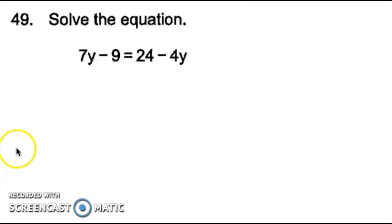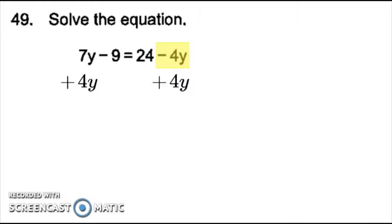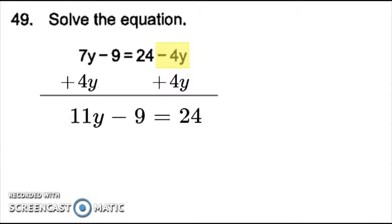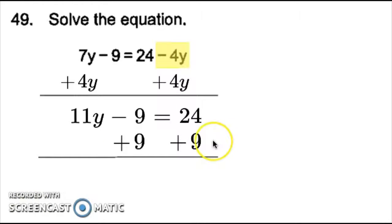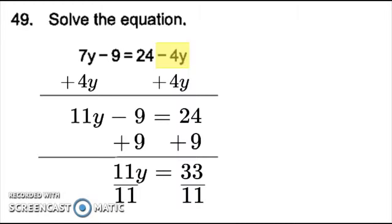For problems like number 49, when there are variables on both sides of the equal sign, I like to move the smallest variable first, which in this case is negative 4y compared to the 7y. Since the negative 4y is being subtracted, I have to add it to both sides, so I add 4y to both sides. 7y plus 4y would be 11y minus 9 equals 24. Now I have 9 being subtracted from 11y, so the opposite of subtraction is addition, so I add 9 to both sides. 24 plus 9 will give me 33. Since the 11 is next to the y, it means it's being multiplied, so to move the 11 I need to divide. 33 divided by 11 will be 3, so y equals 3 for number 49.